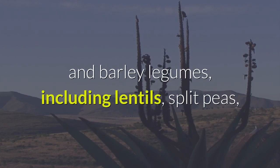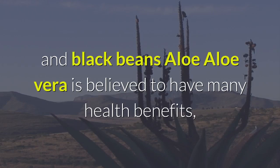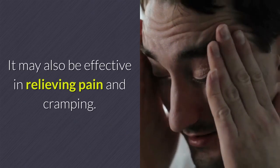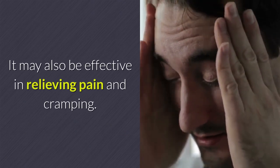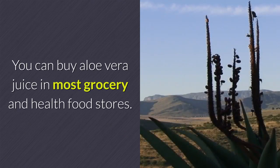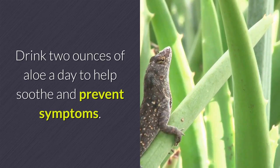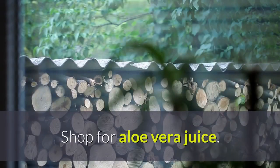Legumes including lentils, split peas, and black beans. Aloe: aloe vera is believed to have many health benefits, including preventing constipation. It may also be effective in relieving pain and cramping. You can buy aloe vera juice in most grocery and health food stores. Drink two ounces of aloe a day to help soothe and prevent symptoms.